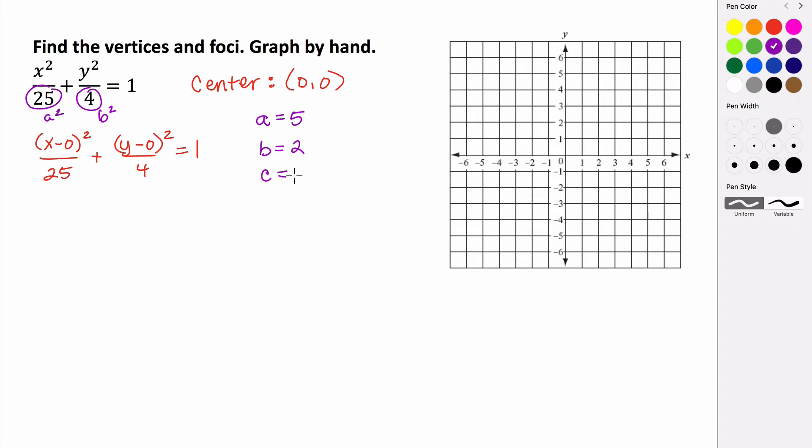And we need to find c. So if you recall, there was this relationship between a, b, and c. It was a squared is equal to b squared plus c squared, because a is the longest value. So we know a and b, so we want to try and get those together and solve for c. So we can subtract b squared from both sides. And we get that c squared is equal to a squared minus b squared. So we know that a squared is 25, b squared is four. So 25 minus four is equal to c squared, which means that c is equal to, so 25 minus four, that's 21. So c is the square root of 21. That's not a perfect square, but it'll have to do.